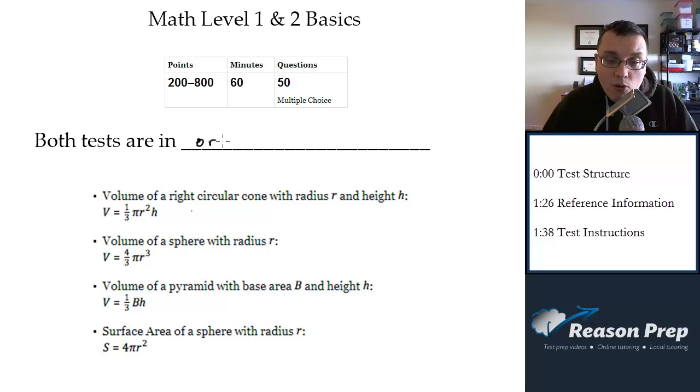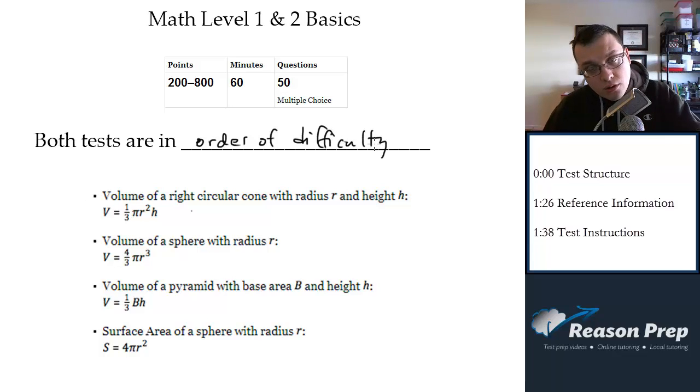Both tests are in order of difficulty. So the questions get, on average, harder as you go on in the test. So number one is generally going to be pretty easy. Number 50 is generally going to be pretty hard.